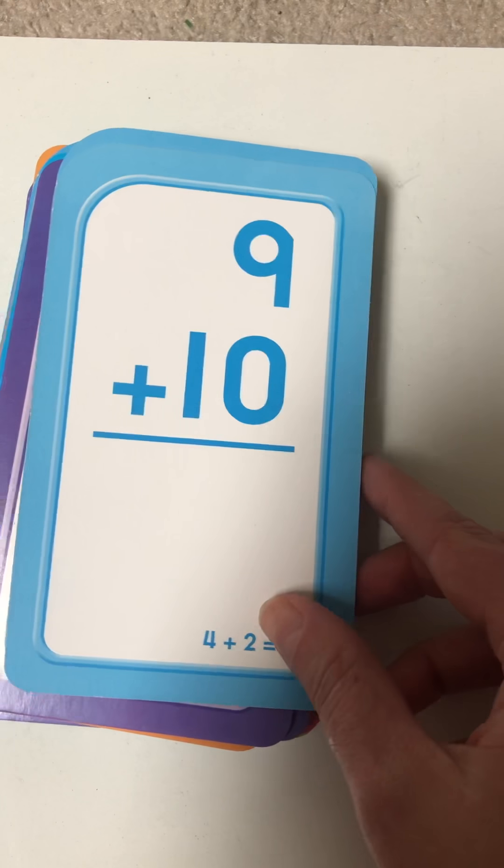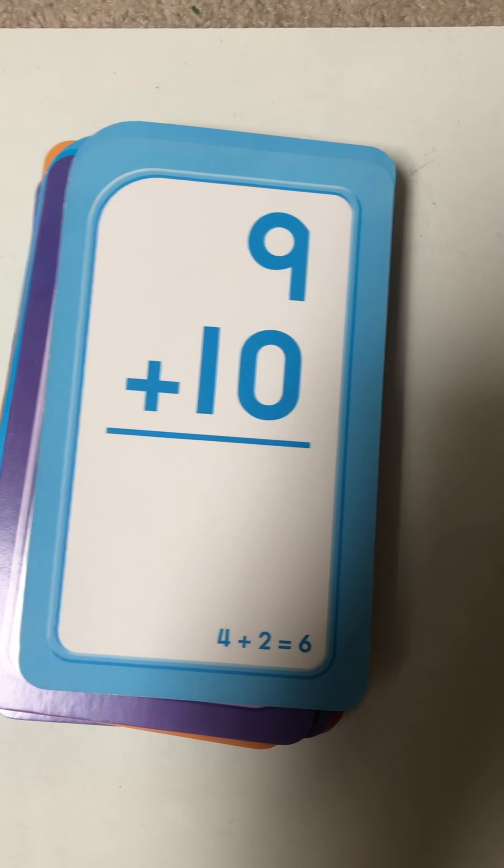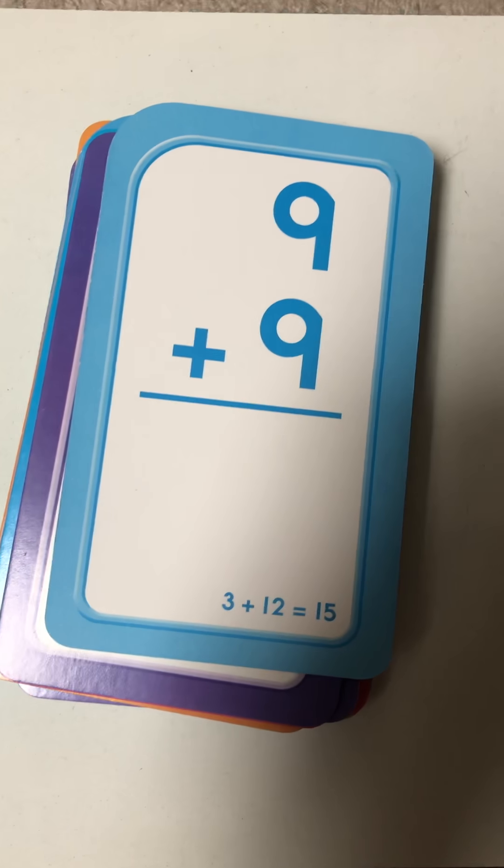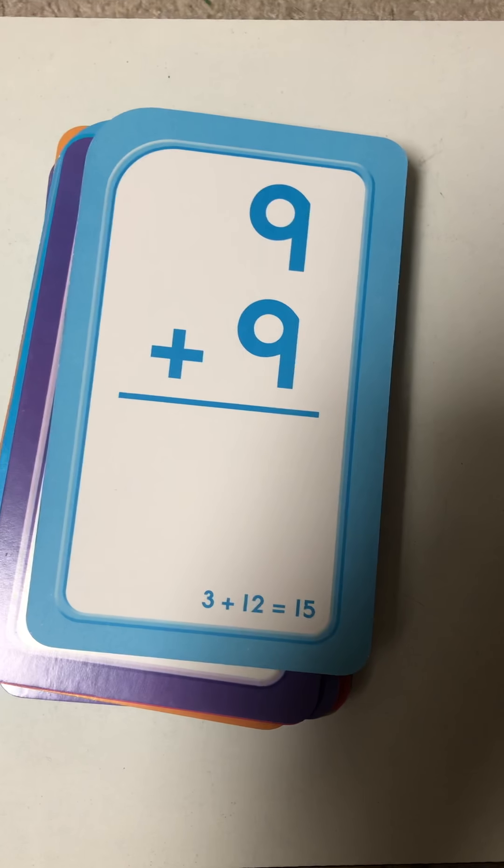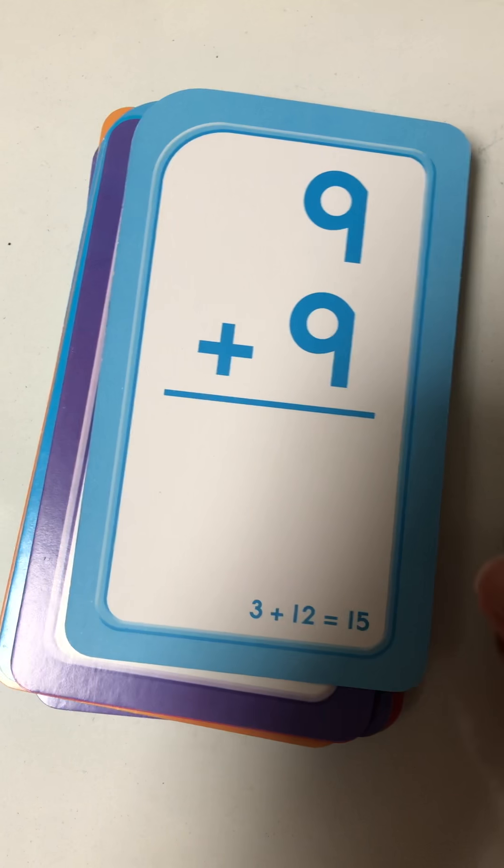Nine plus 10. Start at 10, add on nine. The answer is 19, excellent. Next up, nine plus nine. This is a doubles fact. The answer is 18.